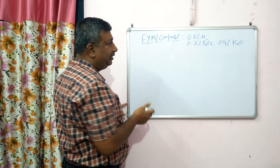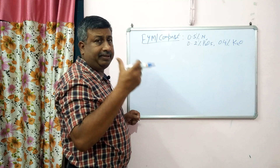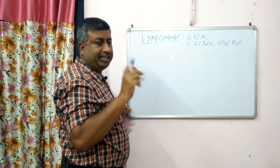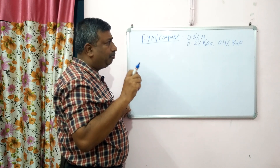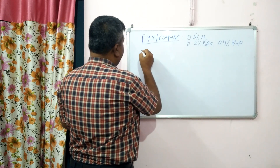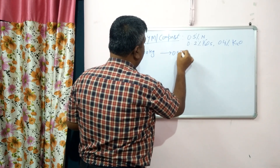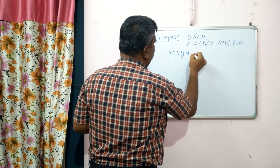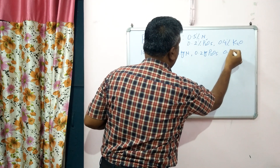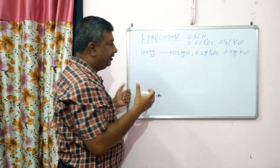So 0.5% nitrogen — percent means per hundred. So 0.5% means in 100 kg, it is only 0.5 kg. One percent means one out of 100. So 0.5% means if we apply 100 kg of FYM or compost, it supplies 0.5 kg nitrogen. This is a simple percentage calculation.